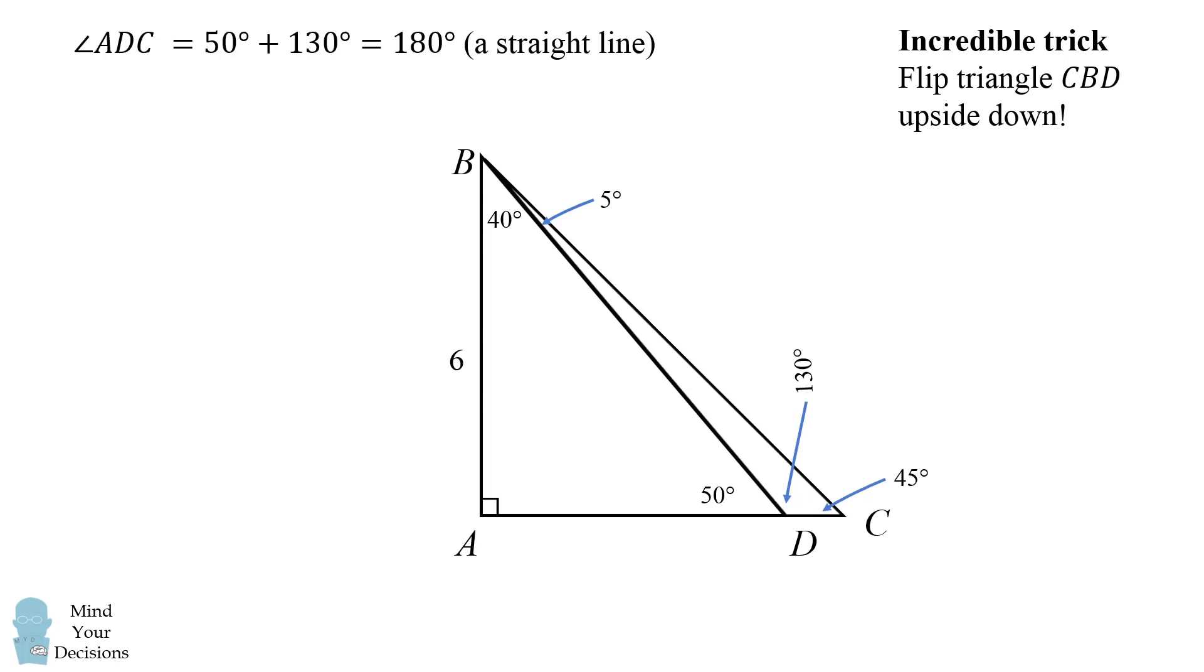Now notice that angle ADC is equal to 50 degrees plus 130 degrees which is equal to 180 degrees, which is a straight line. Next angle ABC is equal to 40 plus 5 which is 45 degrees, and then angle ACB is equal to 45 degrees.